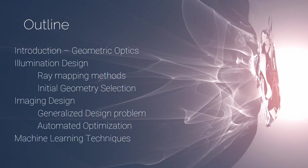The outline of my talk — there are so many different things I've worked on, which is why the title is generic. We're going to start with an introduction to geometric optics, explain the assumptions I made, give an overview of what I'm working on, and then cover two main branches: illumination design and imaging design. This talk roughly follows chronologically how I was introduced to these problems over the last five years, which is pretty exciting.